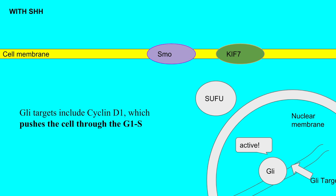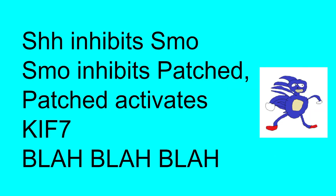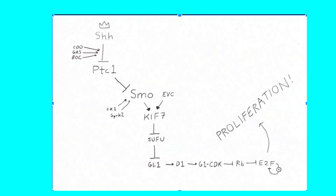Some of its targets include cyclin D1, which pushes the cell through the G1/S cycle by way of E2F. To conclude: sonic hedgehog inhibits patched one, patched one activates smoothened, smoothened works with KIF-7, and so on. I think it's easier to see this in a large pathway diagram that I created myself.